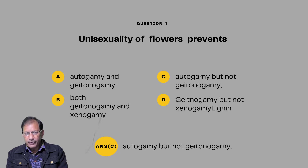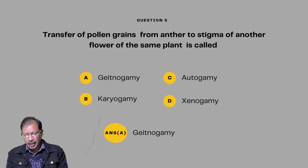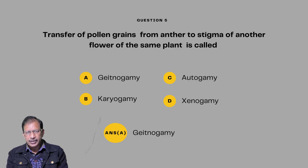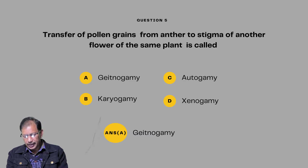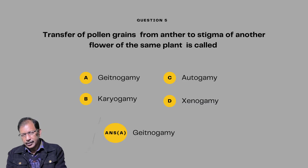Question number five: Transfer of the pollen grains from anther to stigma of another flower of the same plant is called — geitonogamy, karyogamy, autogamy, or xenogamy. Answer will be geitonogamy.